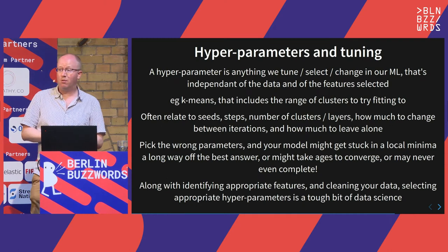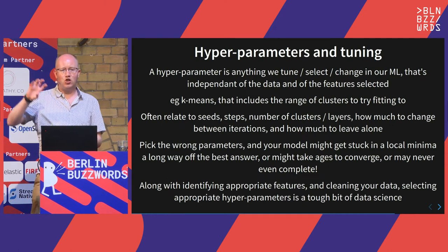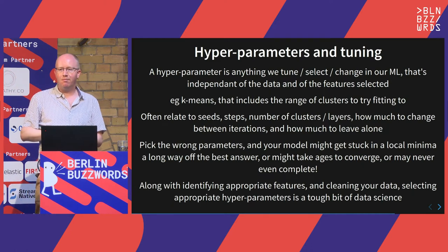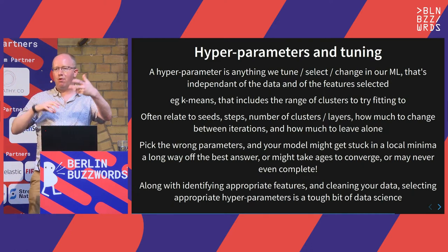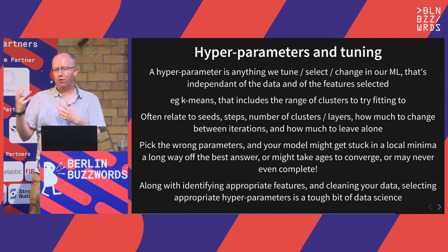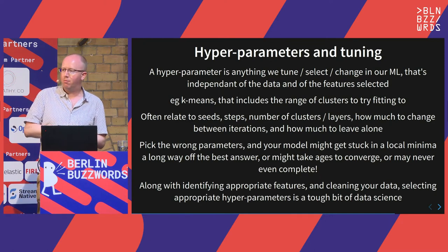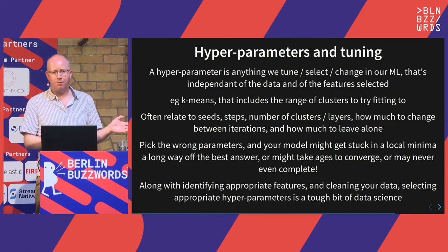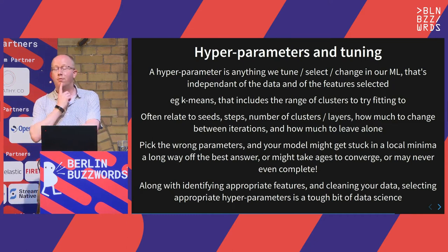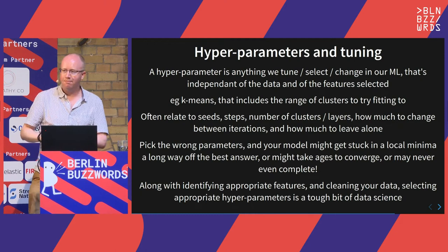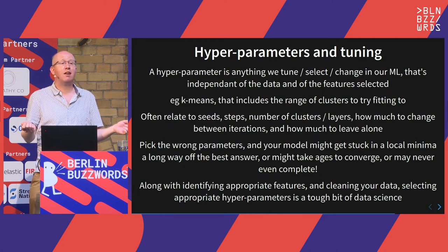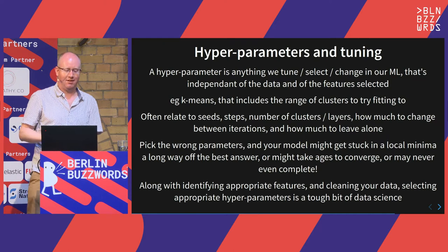Hyperparameters — it's the giant knob on the side that data scientists are always tweaking. It's any parameter you can alter about your model that's not just the input data. It sounds fancy and maybe justifies a pay rise when you tell your boss 'I spent all week tuning the hyperparameters for our model.' In practice it's like: try three, four, five — crashed. Two and a half — yeah, right, ship it.